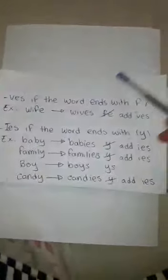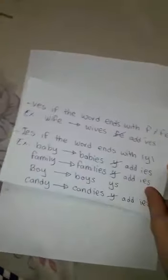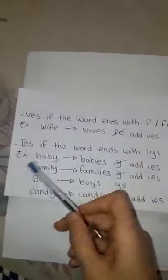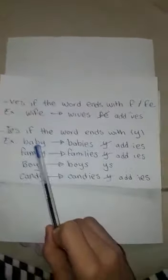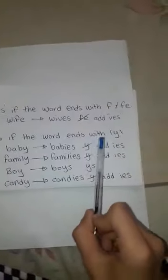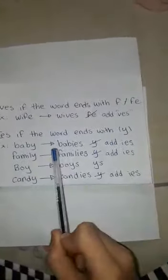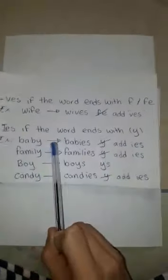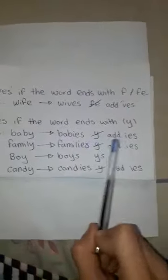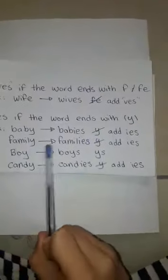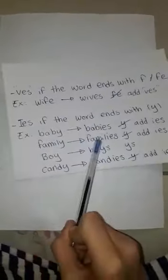Loaf ends with F, so we remove the F and add -VES to make loaves. Also, if a word ends with Y, we remove the Y and add -IES. For example, baby becomes babies, and family becomes families.